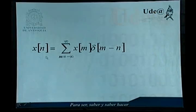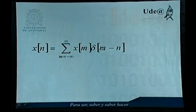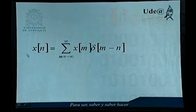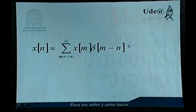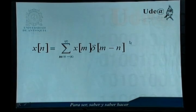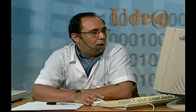Veamos esta otra propiedad: x evaluado en n es igual a la sumatoria desde m igual a menos infinito hasta m igual a infinito de x de m por delta de m menos n. Aquí m es un índice que va recorriendo todos los números enteros desde menos infinito hasta más infinito. Esta propiedad es fácil de ver que se cumple si recordamos que delta de m menos n va a ser igual a 0 siempre que m sea diferente de n, y va a ser igual a 1 si m coincide con n. Por tanto, en esta sumatoria todos los términos se van a anular excepto el término donde m es igual a n, que nos daría el valor x de n.